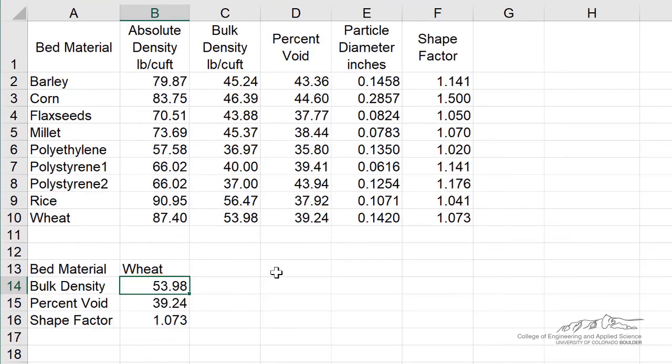It's very useful. The only downside is you're looking up whatever's in the leftmost column. And a lot of times, for example, maybe you want to spit out what's the percent void that corresponds to a shape factor of 1.07. Using the VLOOKUP, it's a little bit more difficult.